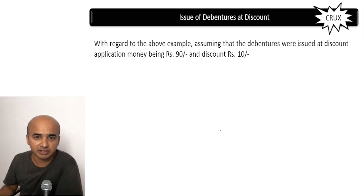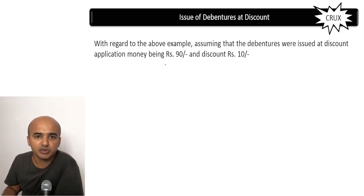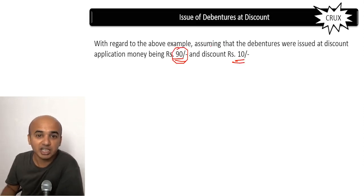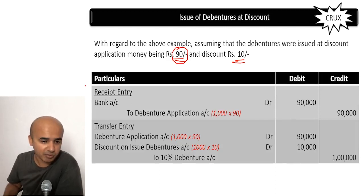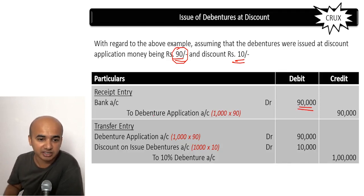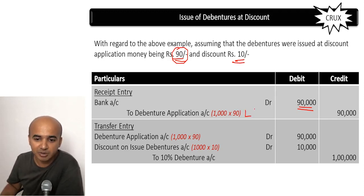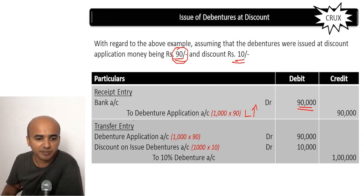Now let us look at issue of debentures at a discounted price, meaning the issue price is less than the nominal value. In this case, we are collecting the entire amount at the time of application itself. Rupees 100 debentures are now being issued at rupees 90, so there is a discount of rupees 10. Receipt entry: debit bank account because we are receiving money — 1,000 debentures into rupees 90, therefore rupees 90,000 is debited — to debenture application, since it is the application stage, credit application account as it is a temporary liability increasing — 90,000.